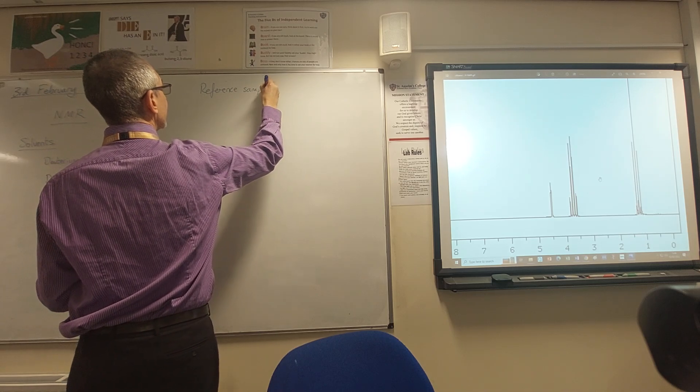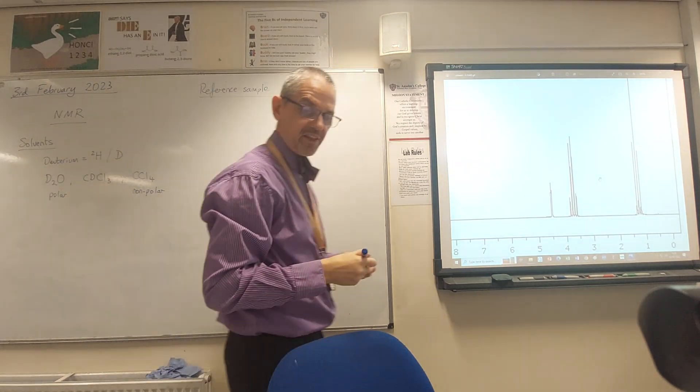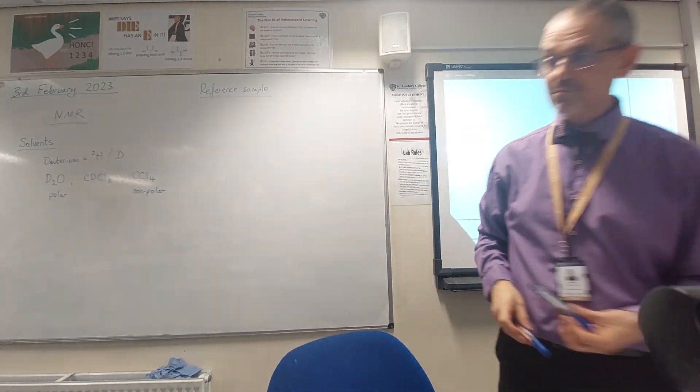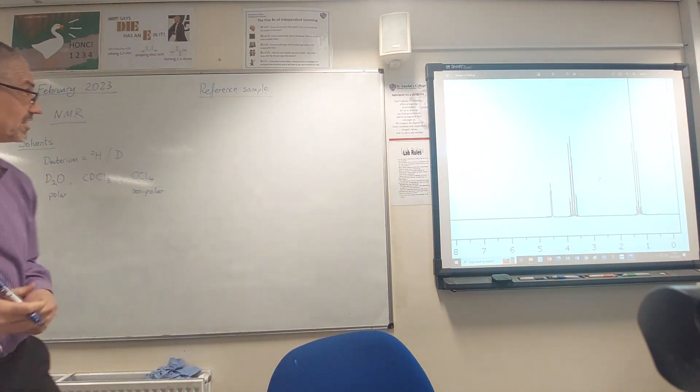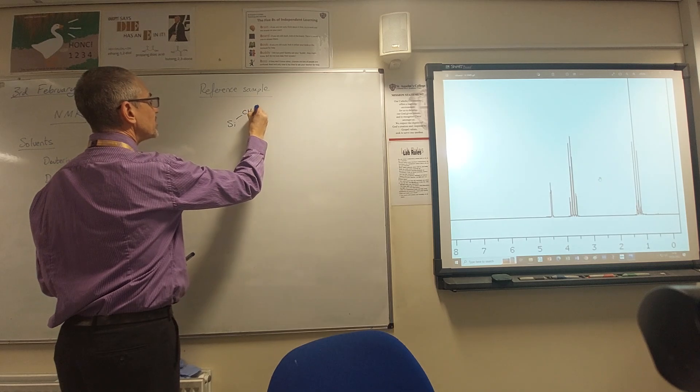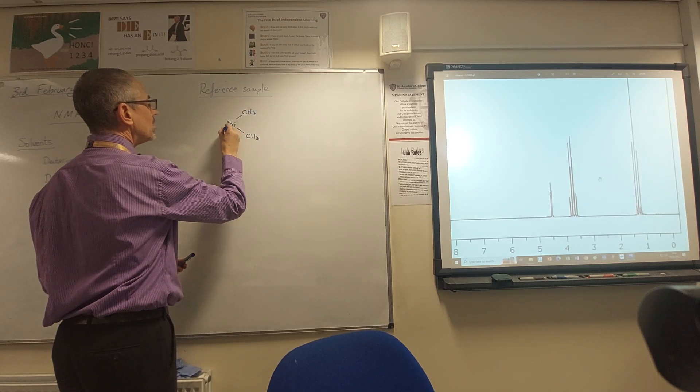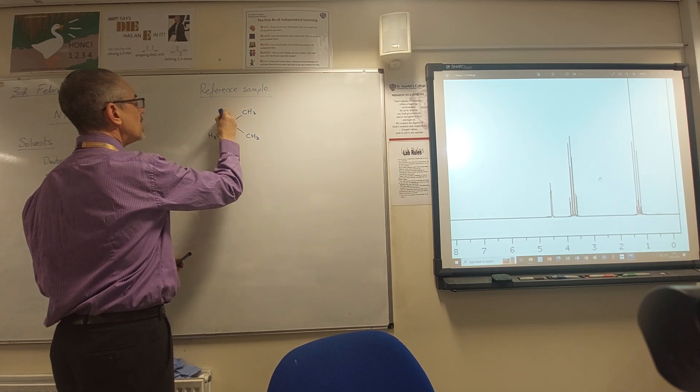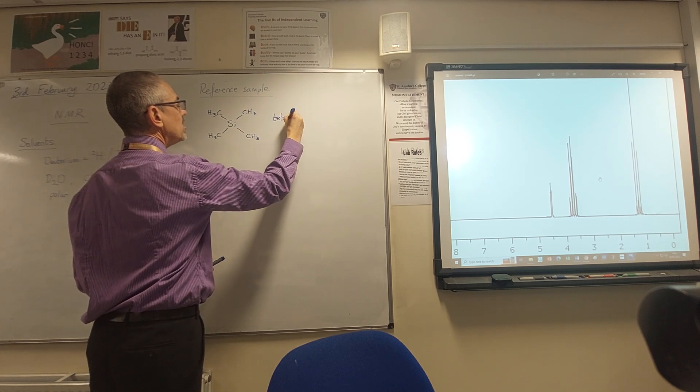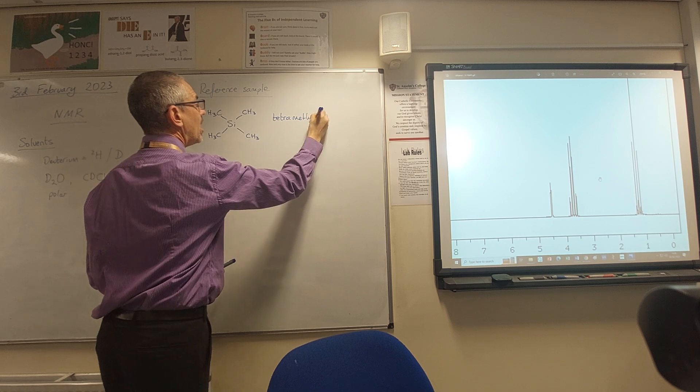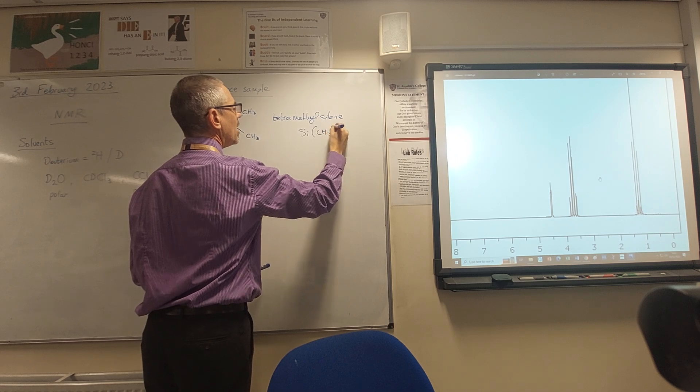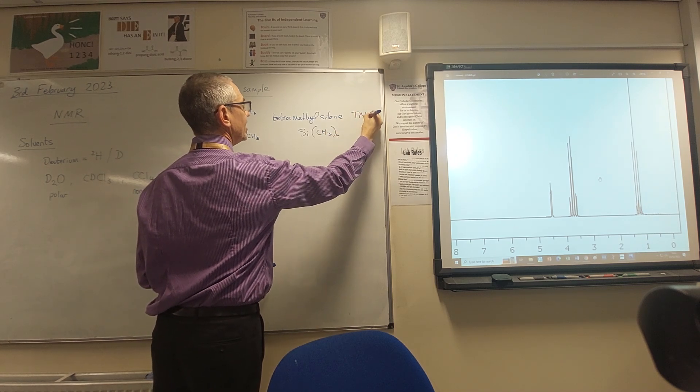As well as the solvent, the other thing you put into the NMR spectrometer is a reference sample. And the one that's used is tetramethylsilane or TMS.